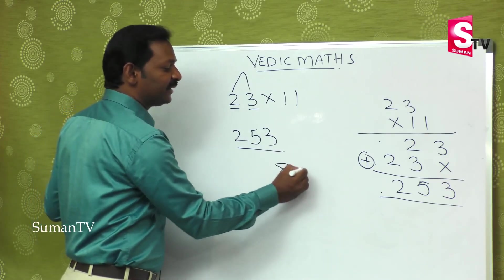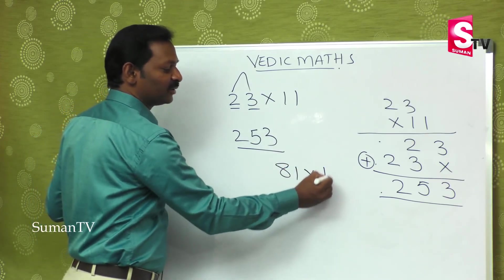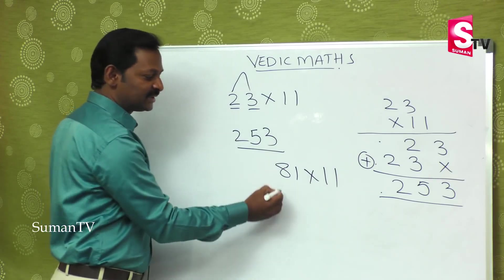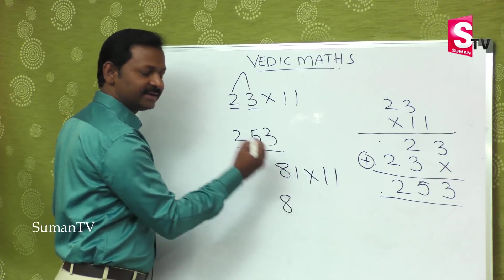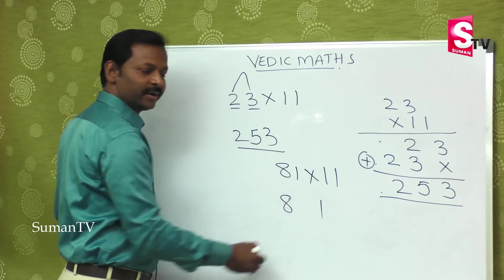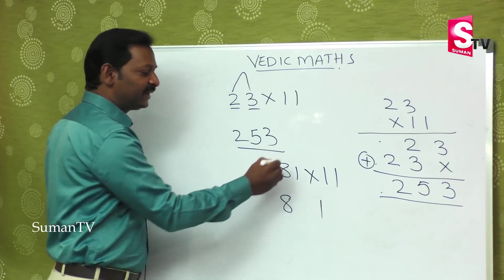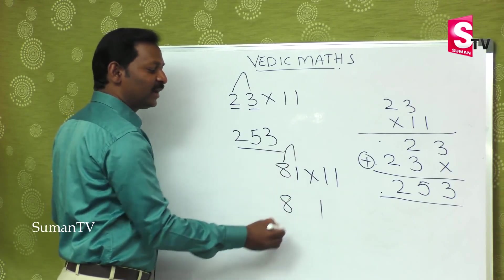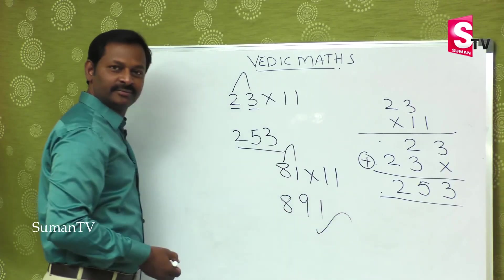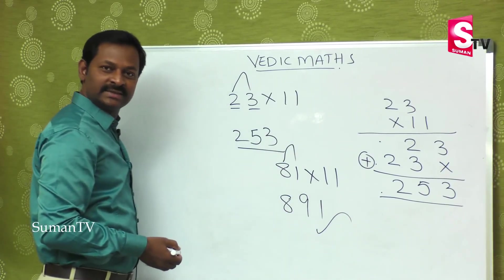Now take 81 into 11. What will you do? First number is 8, last number is 1, and in between: 8 plus 1 is 9. That's it — 891. Is it simple?